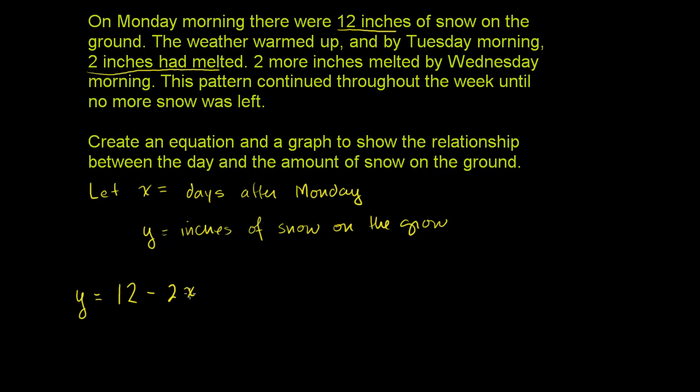x is the day, how many days after Monday, and y is the inches of snow left on the ground. We start with 12, and then every day we lose exactly 2 inches.